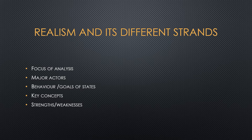Realists assume that all states possess some military capacity and no state knows what its neighbours intend to do. Thus the key concept is realpolitik, i.e., power politics. It is the oldest and most frequently adopted theory of international relations. But realists' overriding emphasis on anarchy and power leads them to a dim view of international law, international institutions, ideas, and others.